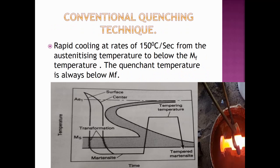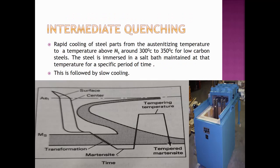In conventional quenching, the steel is quenched from the austenitizing temperature to a temperature below the martensite finish temperature. In the intermediate quenching technique, the steel parts are cooled rapidly from the austenitizing temperature to a temperature above the martensite start temperature — around 300 to 350 degrees centigrade. This particular temperature is achieved by maintaining a molten salt bath, the details of which can be seen in the next slide.